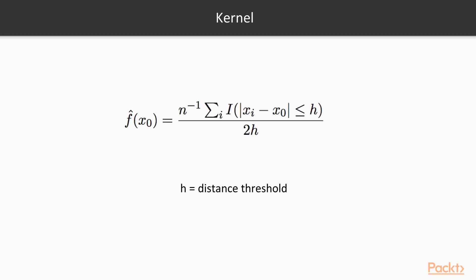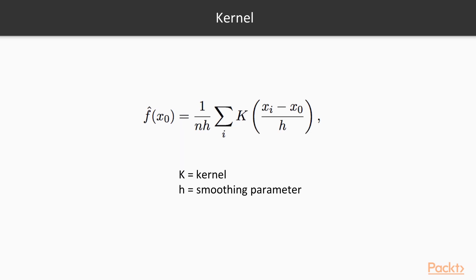We can calculate the density at each point X₀ like this, where H is the distance threshold. This may give a bumpy plot as each point Xᵢ in the neighborhood defined by H receives the same weight. So instead, we use a kernel, where K is the kernel and H is the smoothing parameter. The kernel gives weight to each point Xᵢ based on its proximity to X₀. Hopefully, this video gives an understanding of how to use kernel density estimation to approximate the probability density function of the underlying dataset.